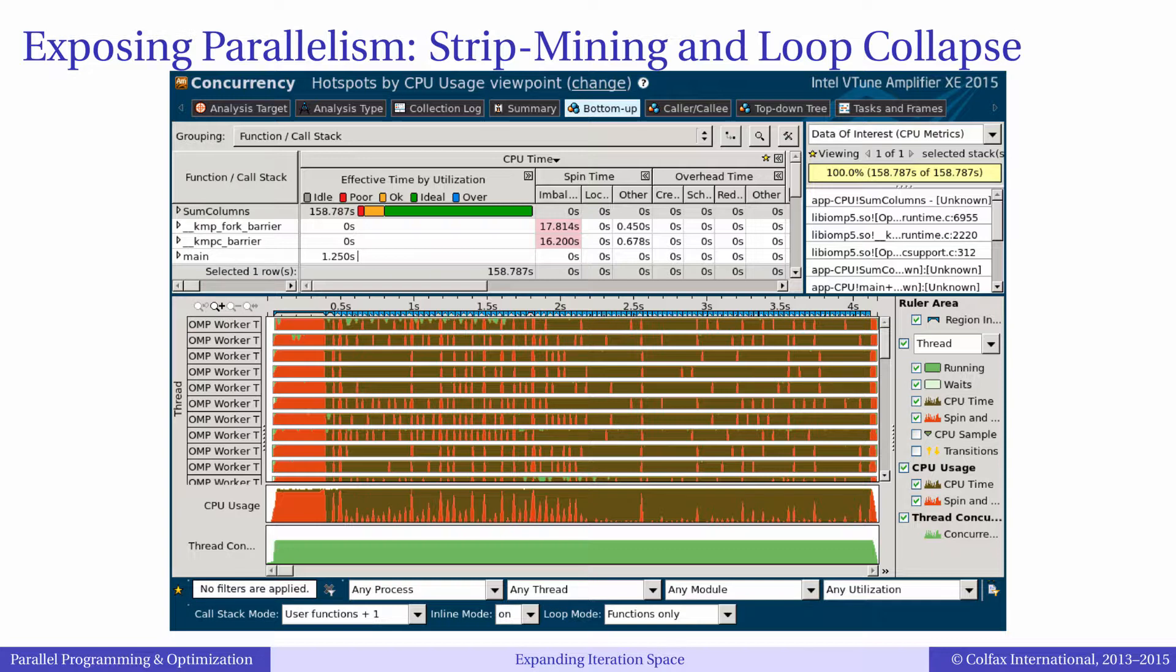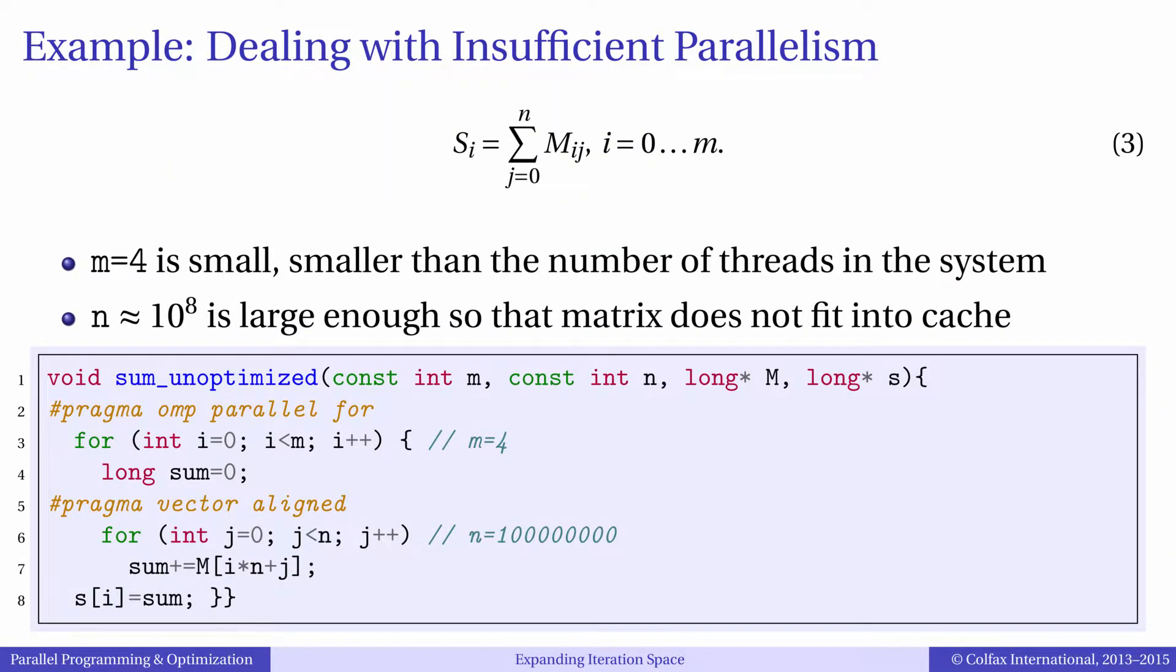This was the intent of our optimization, to balance the parallelism between vectors and cores. Performance measurements that I will show in a minute confirm that this is a highly efficient solution. However, before we view the performance numbers, I want to mention that one could attempt other strategies for expanding parallelism.